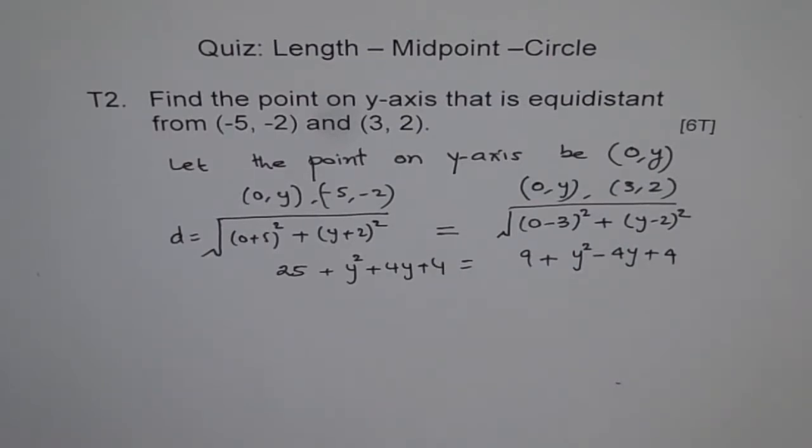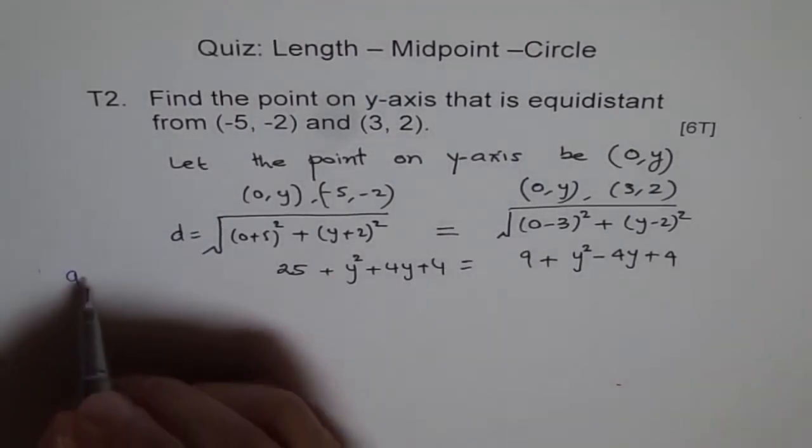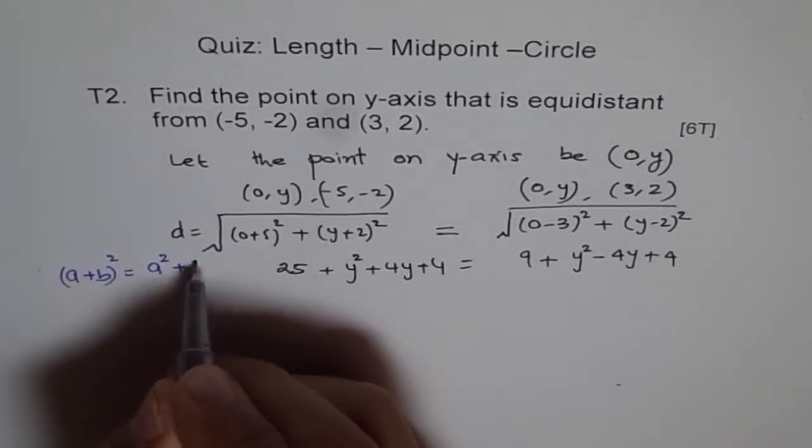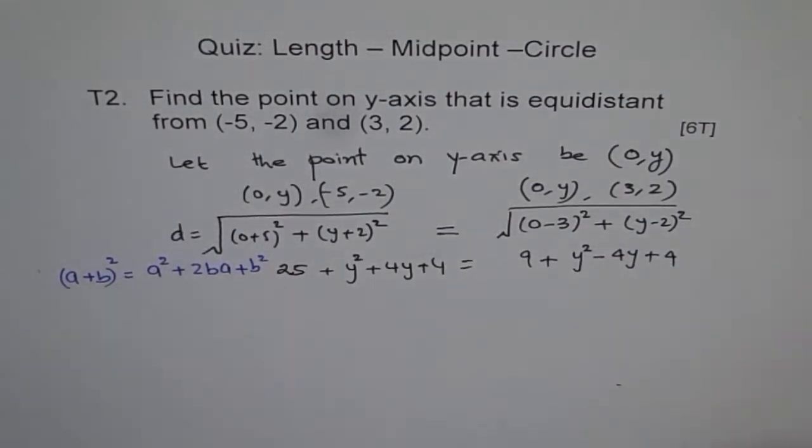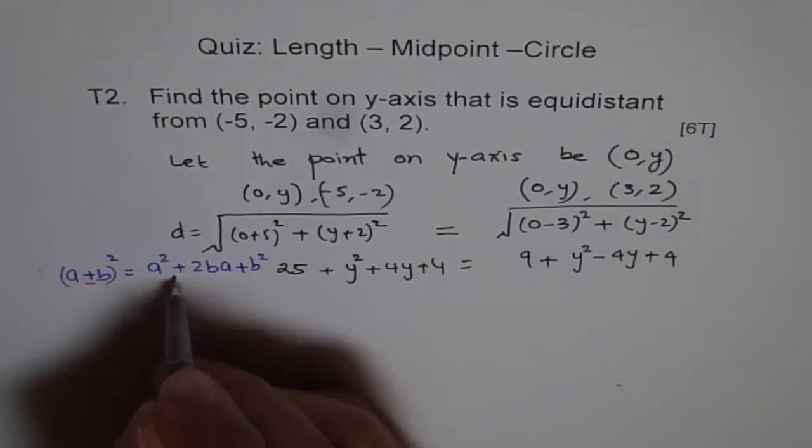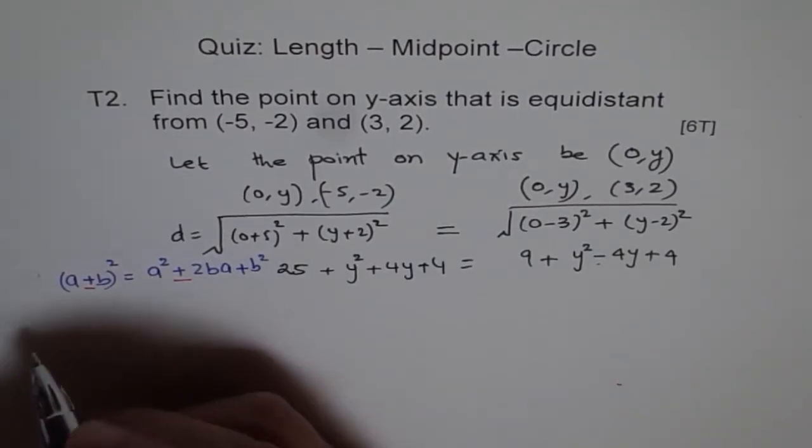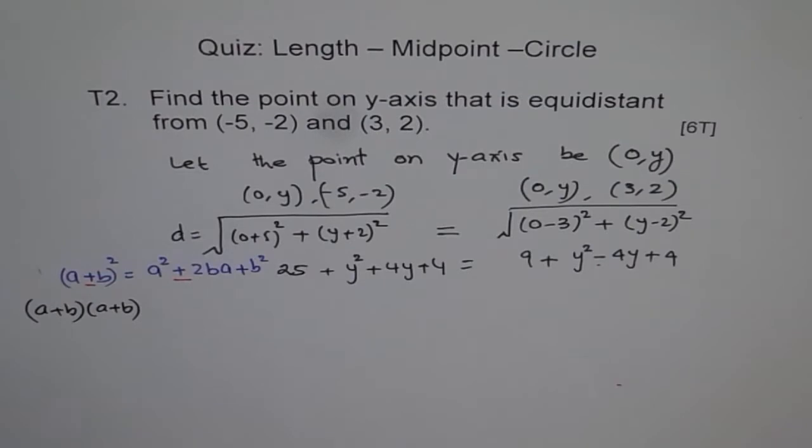I hope you remember the formula which we are using here. We are using (a + b)² or (a - b)² whatever the case may be. (a + b)² equals a² plus 2ab plus b². And if it is minus, then this becomes minus. That's the formula to be used here, or you could expand it using FOIL.